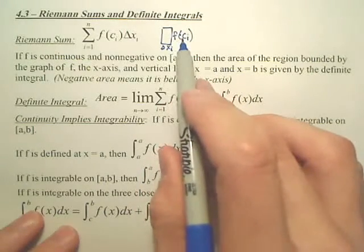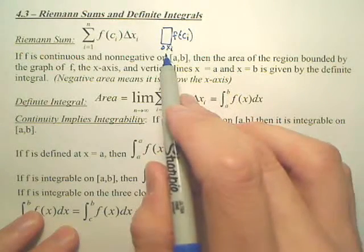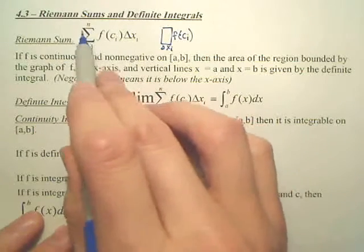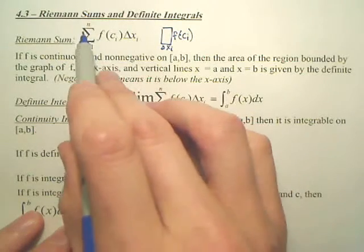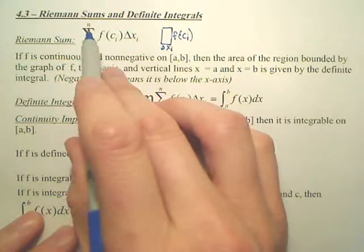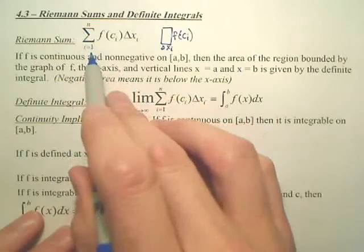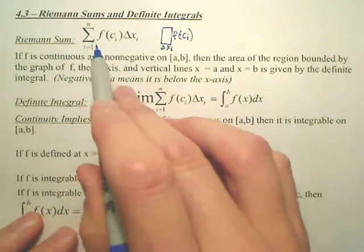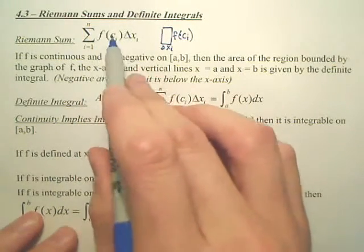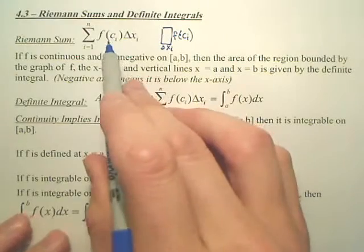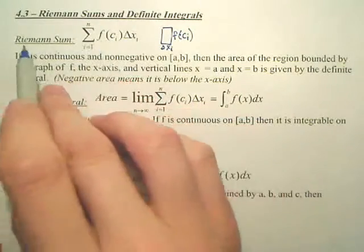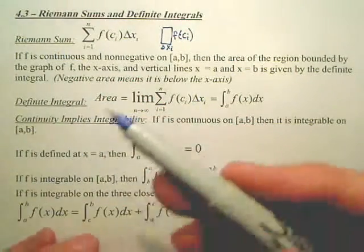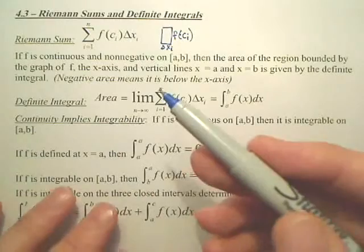Area is going to be F of C times change of X. This means you're going to add up — if there's seven rectangles, you're going to go from one to seven, finding all seven rectangles. This is the area of a rectangle. It's called a Riemann sum — you're summing up a whole bunch of rectangles to approximate an area.